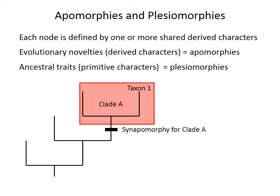We can also consider taxon 1, one of the two taxa in clade A. It can be distinguished from other members by an additional evolutionary novelty. Because this novelty is unique to taxon 1 and not found in the other members, it is called an autapomorphy. An autapomorphy and a synapomorphy are both subgroups of the broader category of apomorphy, distinguished by whether the trait is unique to one taxon or shared among many.